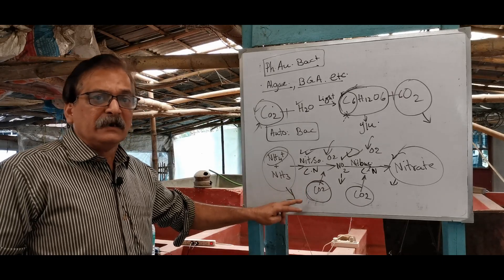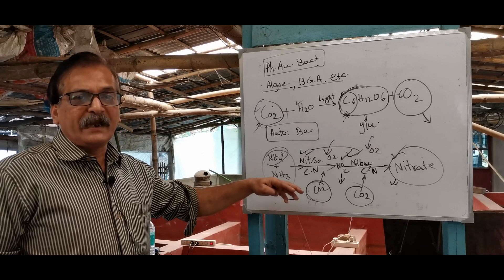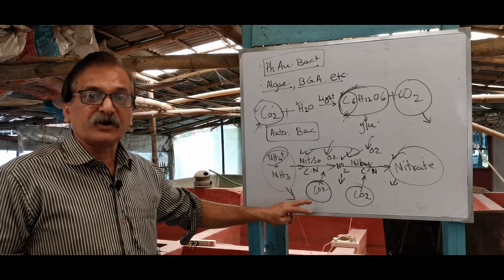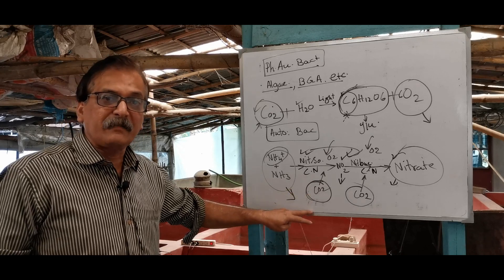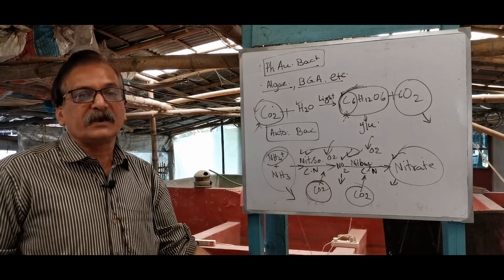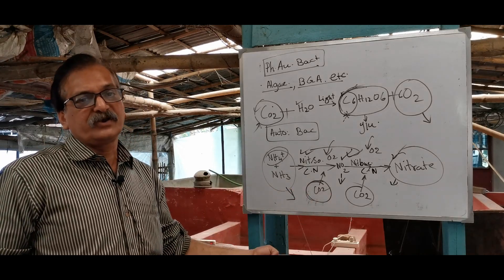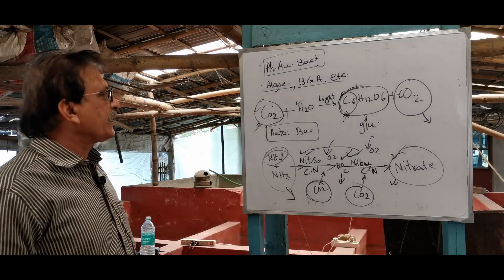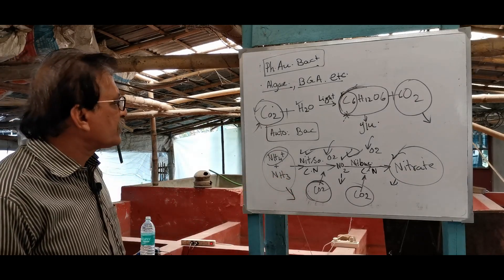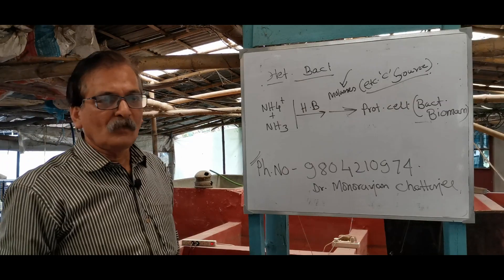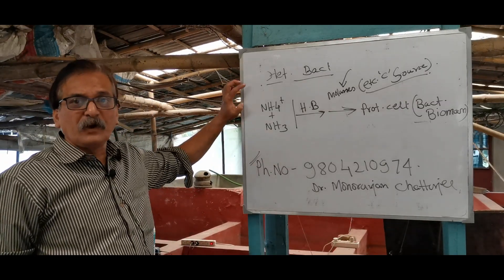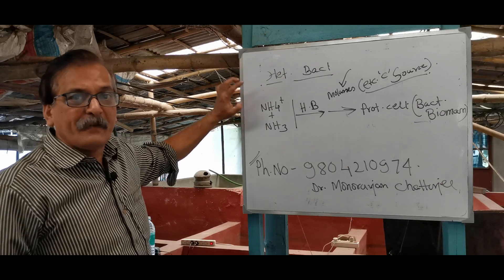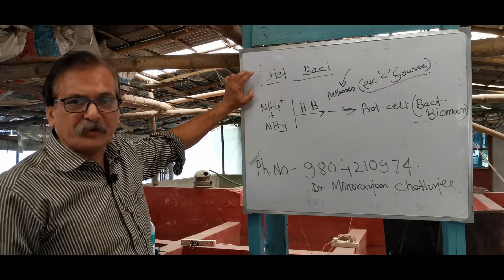Carbon dioxide can be removed and the process is going to change the carbon dioxide. Next, we have heterotrophic bacteria. I am talking about the first process of phototrophic bacteria and autotrophic bacteria — the third thing is heterotrophic bacteria.